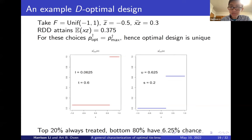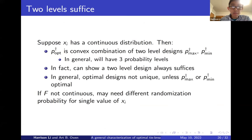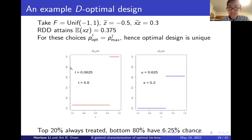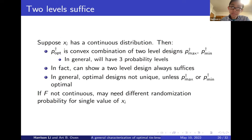In general, the optimal design is a convex combination of p max dagger and p min dagger. When the x's have a continuous distribution, there always exists a two-level design that suffices. You won't necessarily have levels of 0 or 1 — you might if you're on the boundary, as in this example — but in general you may need an arbitrary two-level design with two other treatment levels.